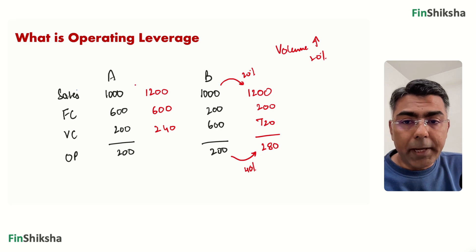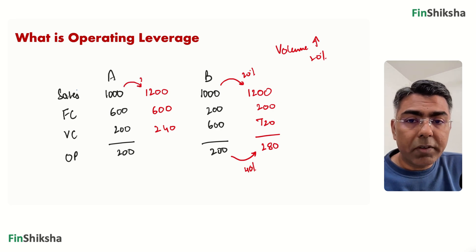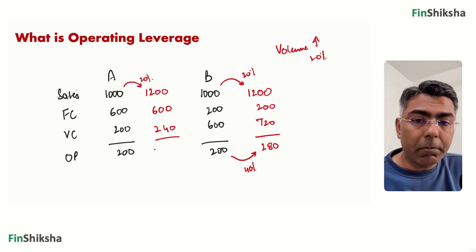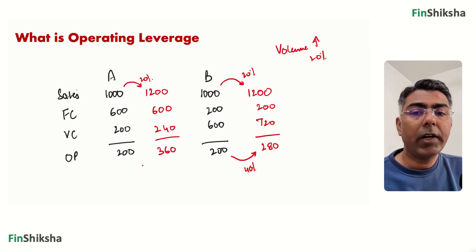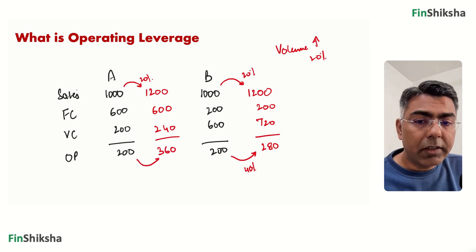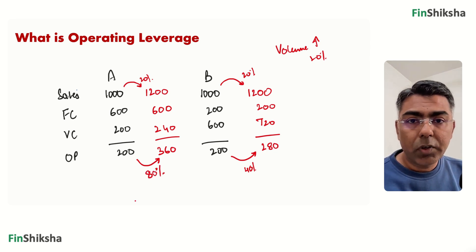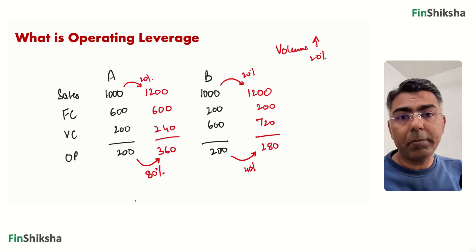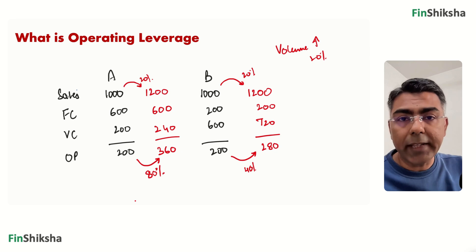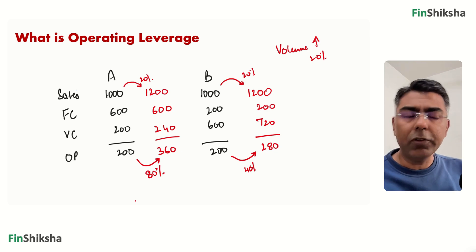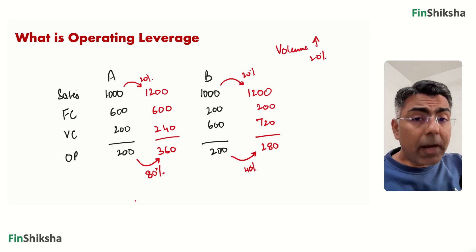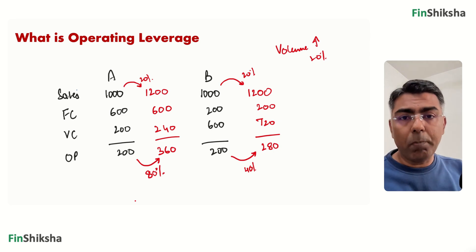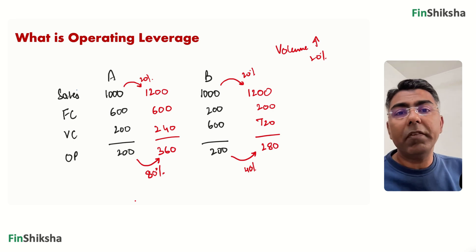Now check out Company A — same 20% change in sales. But because fixed cost is a larger component, the profit number comes to 360, which is an 80% change in profits. So we learn two things: when you change sales by a certain percentage, profits go up more than that. And in companies where fixed cost is a larger proportion of overall cost, the degree of change will be even larger.